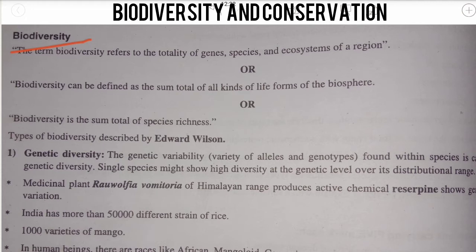Biodiversity is basically the totality of genes, species, and ecosystems — including genetic diversity, species diversity, and ecological diversity. Biodiversity was basically discovered by Edward Wilson. It not only occurs at the species level but also at the micromolecular level, such as bacteria. So it is a combined diversity — the sum total of all kinds of life forms.